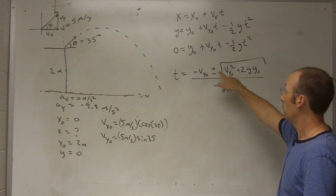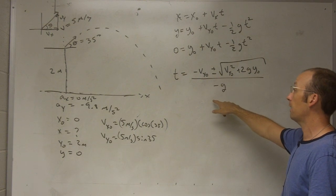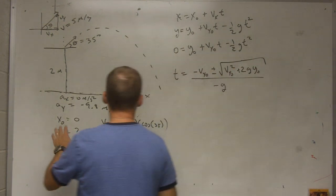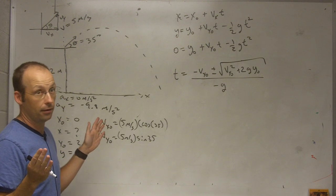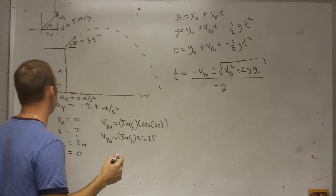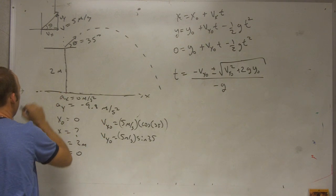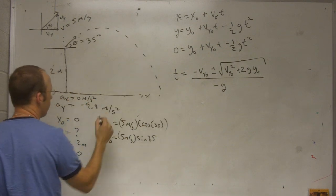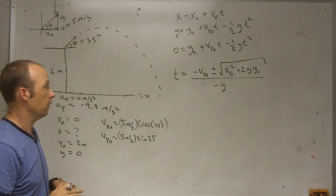I'm going to get two answers for when the ball gets back down to y equals zero because math does not know what we're doing here. It says, okay, the ball was at y equals zero right here and right there. So we're going to get a negative time.